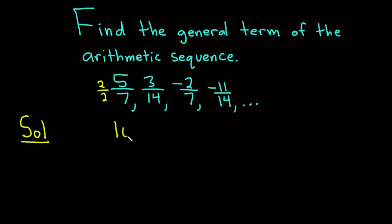The first term is really 10 over 14. The second term is 3 over 14.